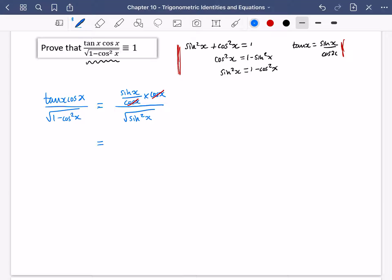So I can rewrite the numerator now as just sin x. And the square root of sin squared x is just going to be sin x. And if you do sin x divided by sin x, you just get 1.